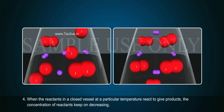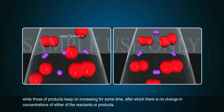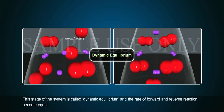When the reactants in a closed vessel at a particular temperature react to give products, the concentration of reactants keep on decreasing, while those of products keep on increasing for some time, after which there is no change in concentrations of either of the reactants or products. This stage of the system is called dynamic equilibrium, and the rate of forward and reverse reaction become equal.